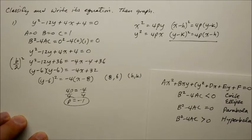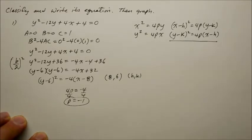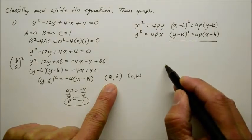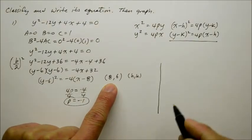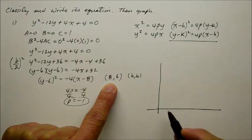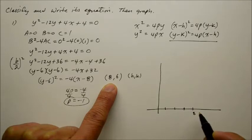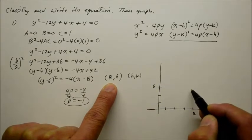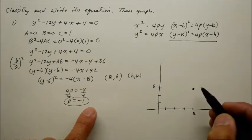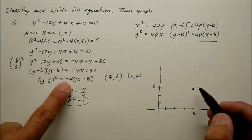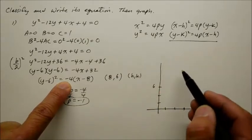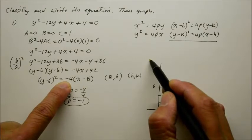So then how do you graph this? Well, now the vertex is at 8 and 6. 2, 4, 6, 8, and 2, 4, 6. Here is the vertex now. And the coefficient is given as a negative, so it's going to open to the left. So let's just do that randomly right here.